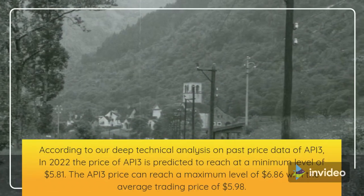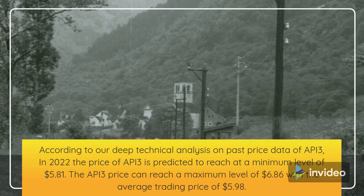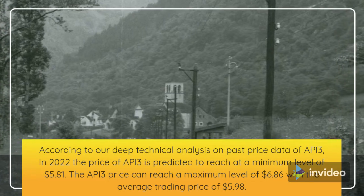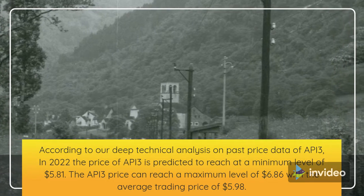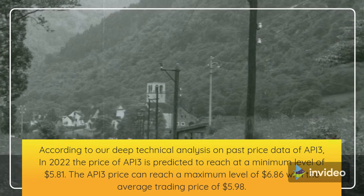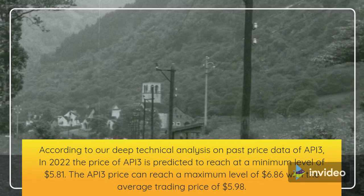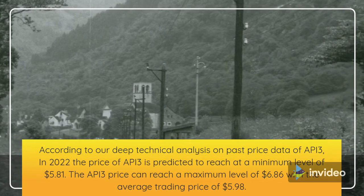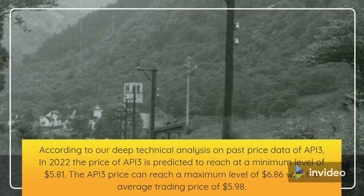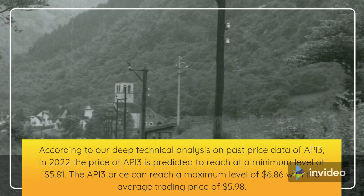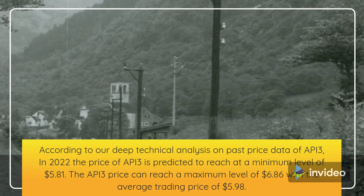API 3 Price Prediction 2022. According to our deep technical analysis on past price data of API 3, in 2022 the price of API 3 is predicted to reach a minimum level of $5.81. The API 3 price can reach a maximum level of $6.86 with the average price of $5.98.